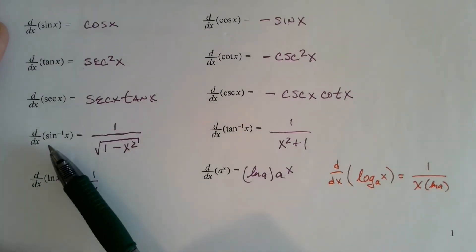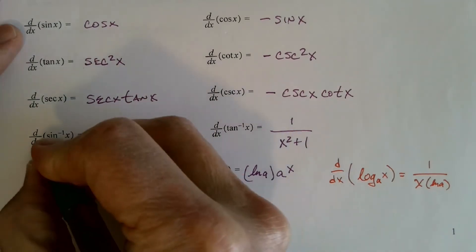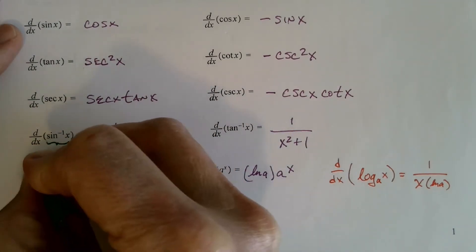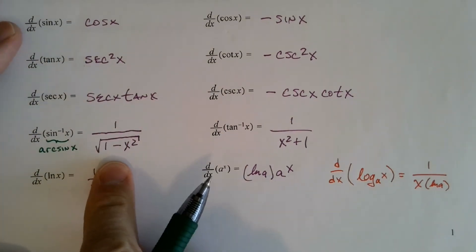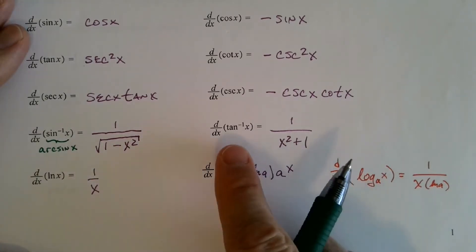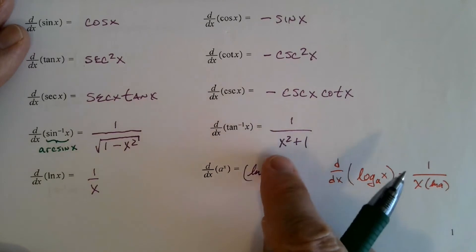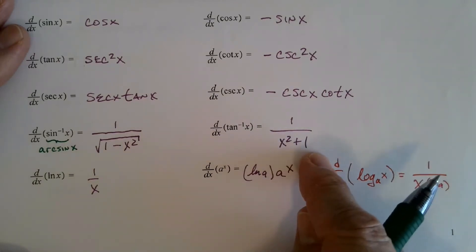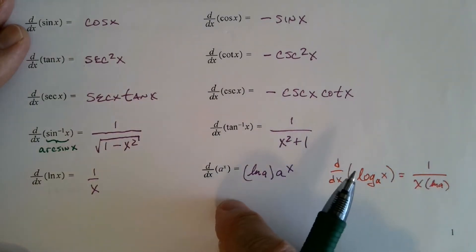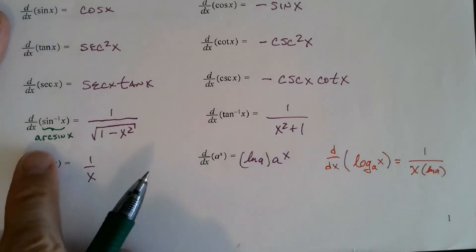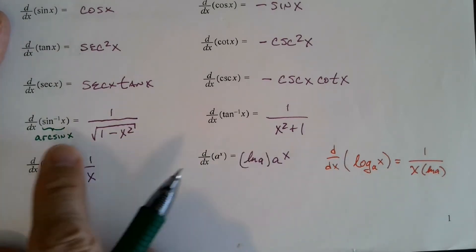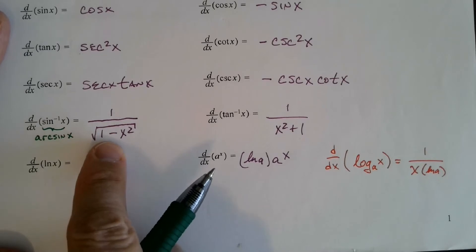The derivative of the inverse sine function, also written as arc sine of x, is 1 divided by the square root of 1 minus x squared. The derivative of the inverse tangent function is 1 divided by x squared plus 1. There are derivatives for inverse cosine, cotangent, secant, and cosecant, but they don't come into play as much. The derivative of the inverse cosine of x is negative 1 divided by the square root of 1 minus x squared.